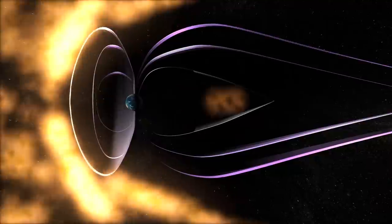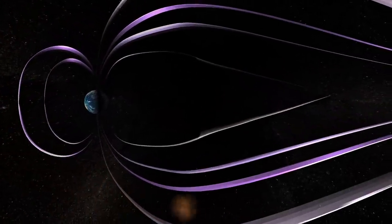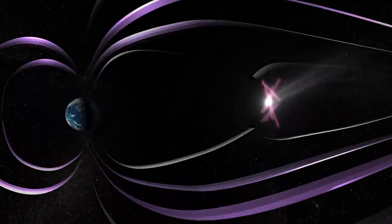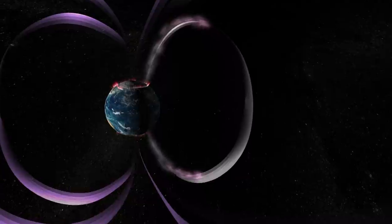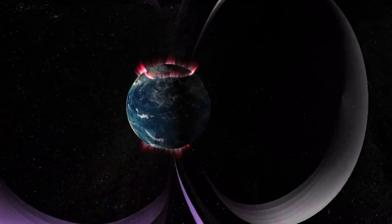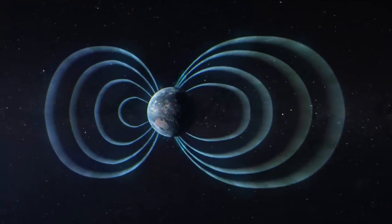All auroras are created when charged particles from the sun are first trapped in Earth's magnetic environment and are then funneled into the atmosphere. But scientists are now realizing that small changes in the magnetic environment can cause big differences in how the aurora can look.